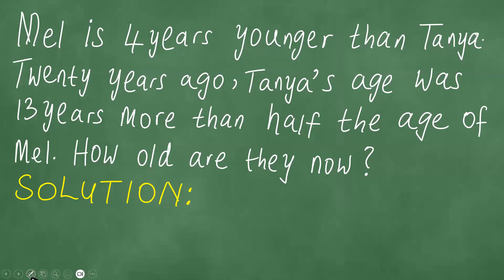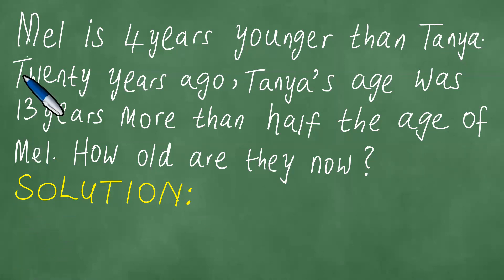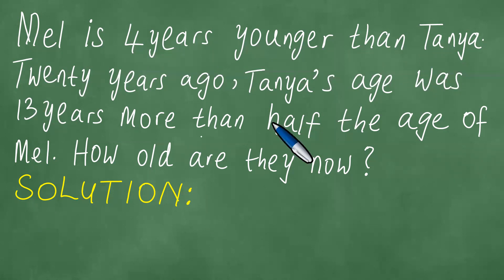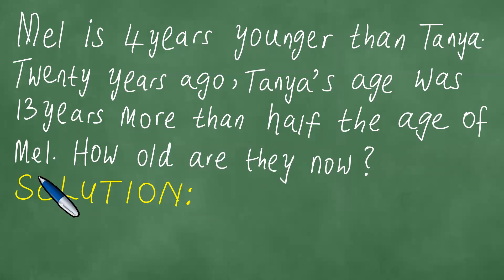We want to solve this problem: Mel is 4 years younger than Tanya. 20 years ago, Tanya's age was 13 years more than half the age of Mel. How old are they now?